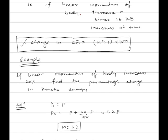So if linear momentum of a body increases n times, its kinetic energy increases n squared times. If we determine the percentage change in kinetic energy, it is given by: percentage change in kinetic energy is equal to (n squared minus 1) into 100, where n represents the number of times that linear momentum of a body changes.